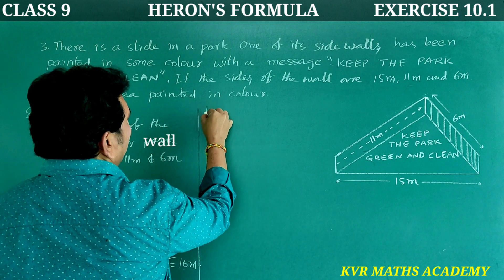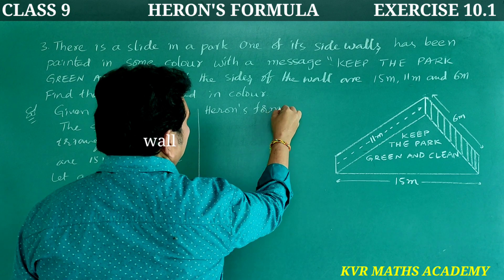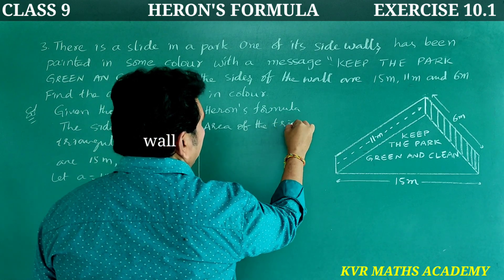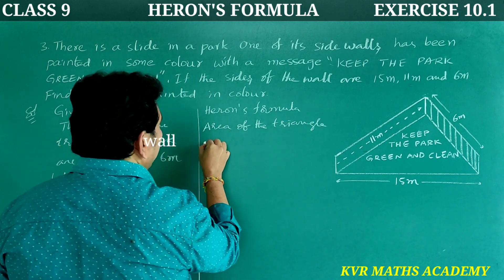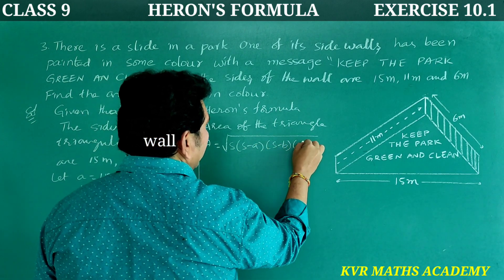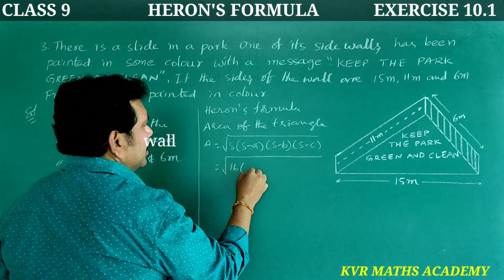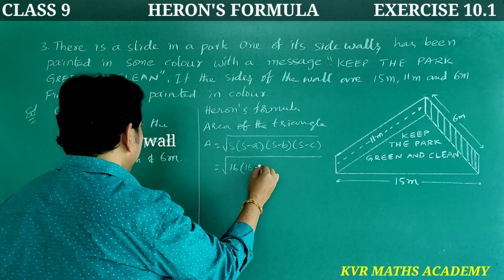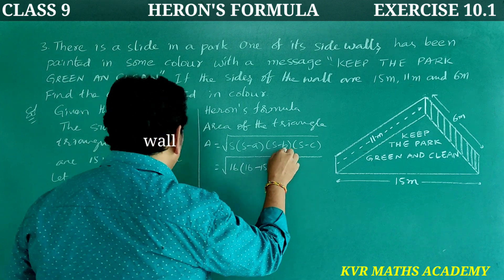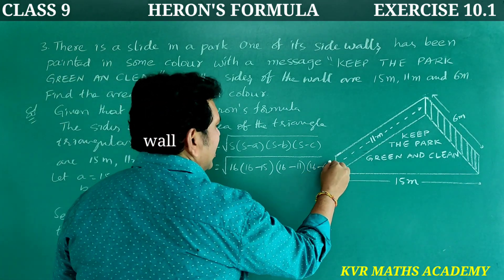Now, using Heron's formula, area of the triangle A is equal to root of S into S minus A into S minus B into S minus C. Right. So, that is equal to root of 16 into 16 minus 15 into 16 minus 11 into 16 minus 6.